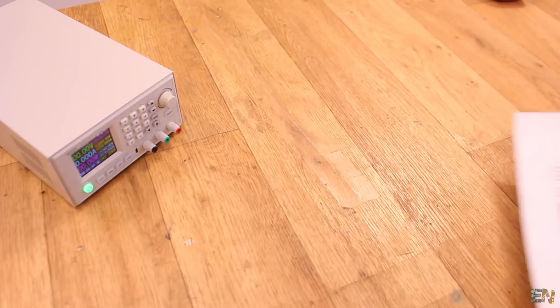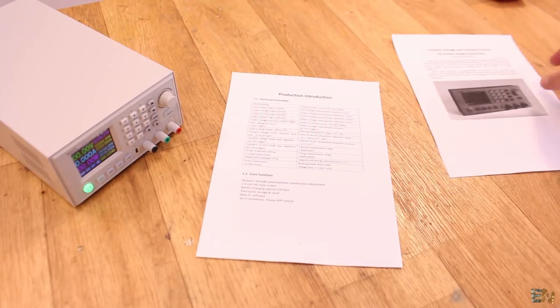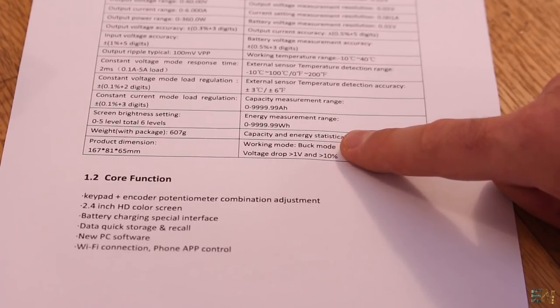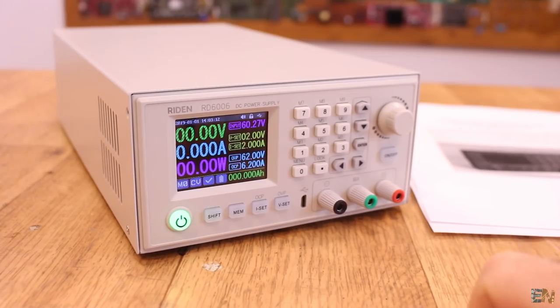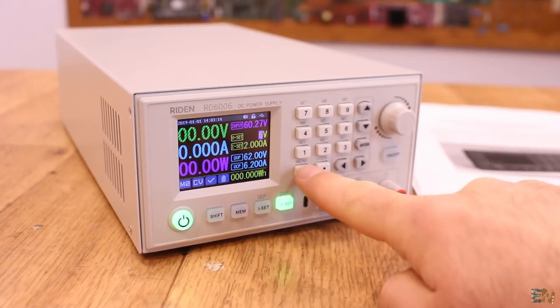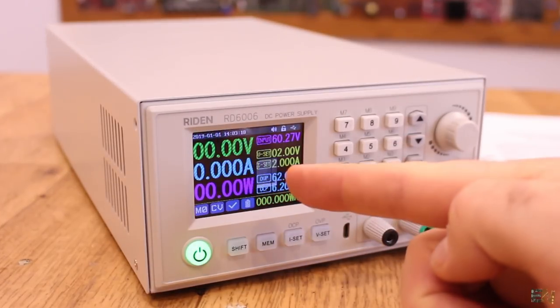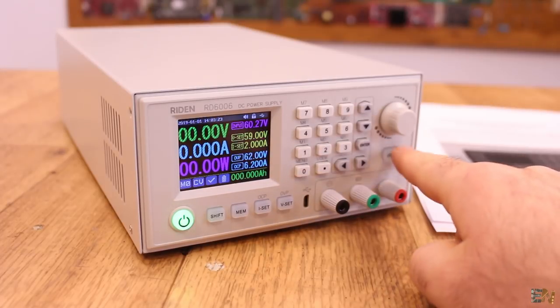First thing I've seen on the user manual is that it has a 1V dropout. So with a maximum of 60V input, the maximum output could be only 59V. As you can see, if I set it to 60V output, it won't work. But if I put 59V it works with no problems.